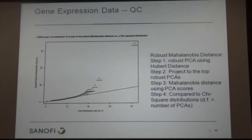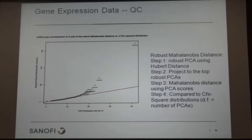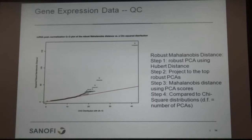Another thing we do is use a robust Mahalanobis distance to identify potential outliers. First we use a robust principal component analysis with Huber distances — because standard PCA is very sensitive to outliers and would skew the whole analysis. Then we project onto the top robust principal components.